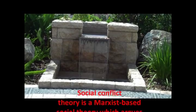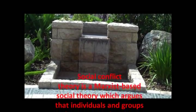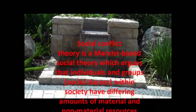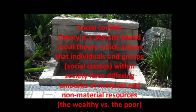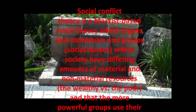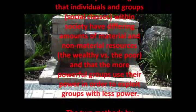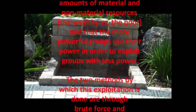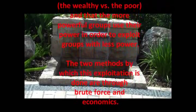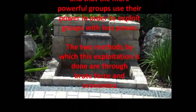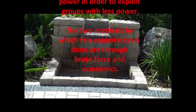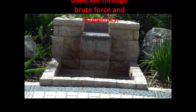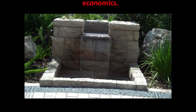Conflict theory is a Marxist-based social theory which argues that individuals and groups within society have different amounts of material and non-material resources — as in the wealthy versus the poor — and that the more powerful groups use their power to exploit groups with less power. The two methods by which this exploitation is done are through group force and with economics.